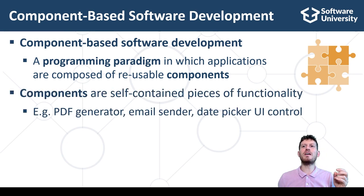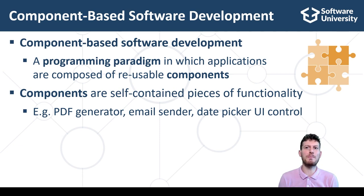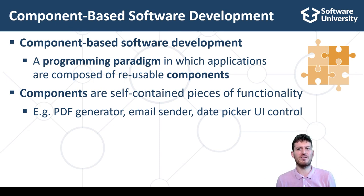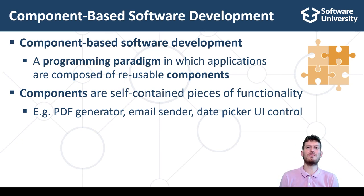Components are self-contained pieces of functionality ready to be inserted as part of a larger software application. For example, a PDF generator component can be used to create PDF reports, insert formatted text, images, tables and other elements, and create a PDF file which can be displayed in the web browser or printed on paper. The internal details about the PDF document format are hidden in the component — developers do not need to care about these technical details; they just use the component.